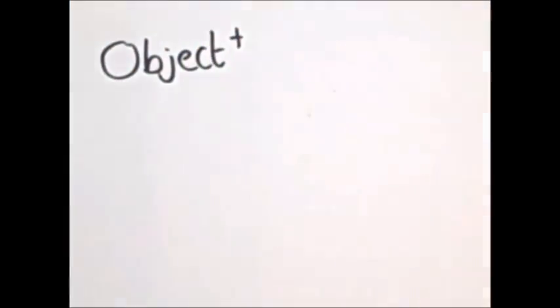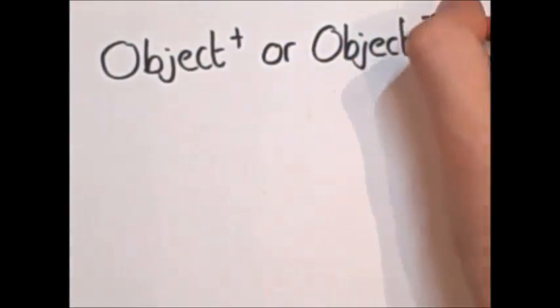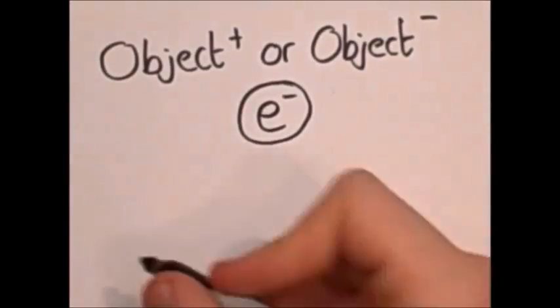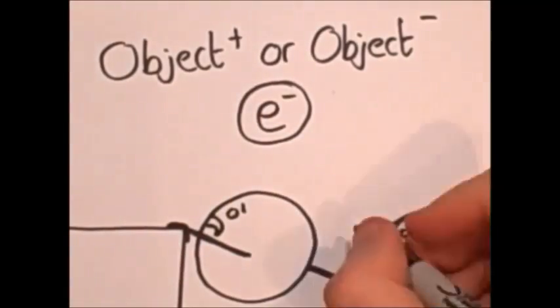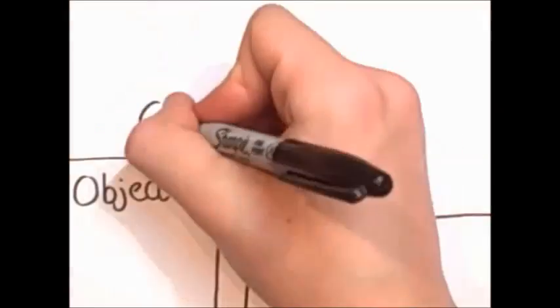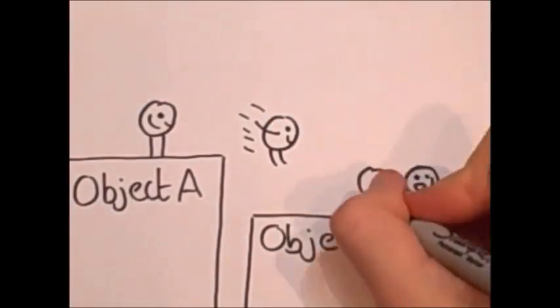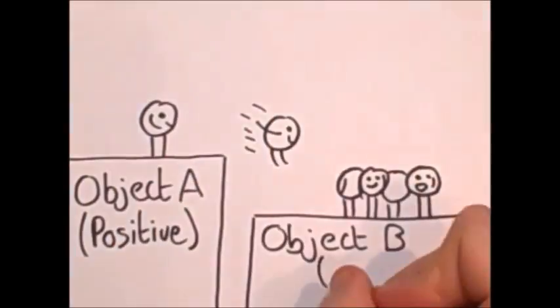Static electricity is all about when an object is positively or negatively charged. As electrons are negative, when two insulated materials are rubbed together, the electrons are scraped off one material onto the other. The item losing electrons will become positively charged and the material gaining electrons will become negatively charged.